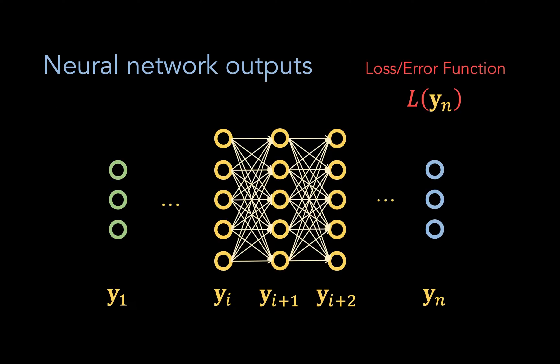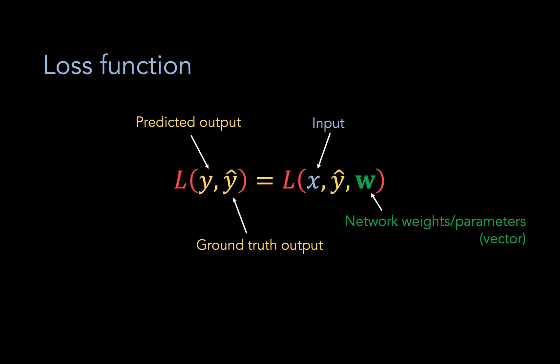Just to recap, a neural network typically receives input data at some input layer, then produces outputs at an output layer, and a loss or error function is typically calculated on the outputs of the final layer. However, it need not be the case that it's just on the final layer. This is just typical. Now in a more general sense, the loss function is then a function of the input data, as well as the network weights or parameters, and the ground truth output.